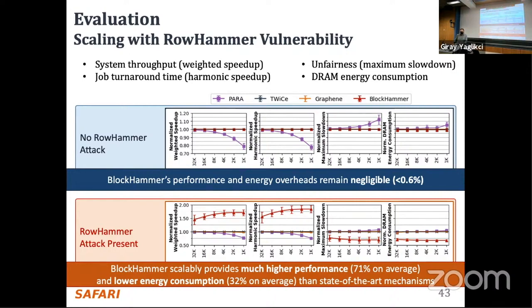Another audience member recalls hearing from Onur about applications exhibiting Rowhammer-like behavior. The presenter explains that row-level temporal locality means there is a high chance an application activates the same row again in the near future, which could be considered hammering. However, in practice this behavior doesn't reach the Rowhammer threshold, since Rowhammer requires reaching a large hammer count in a very short time window.